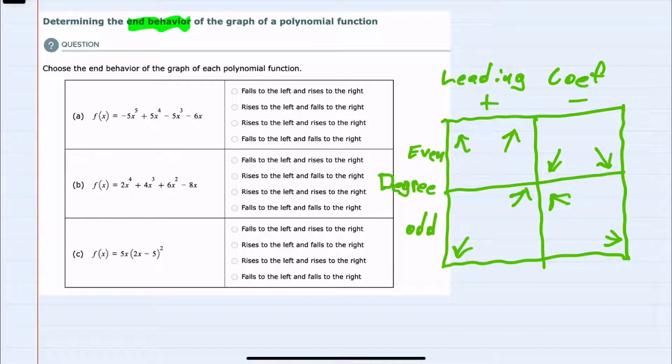And to determine the end behavior, we're going to look at two elements. We'll look at the leading coefficient and the degree of the polynomial.